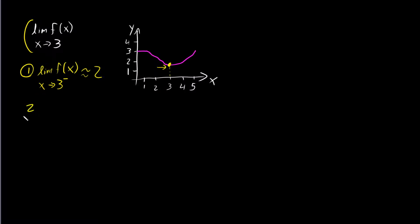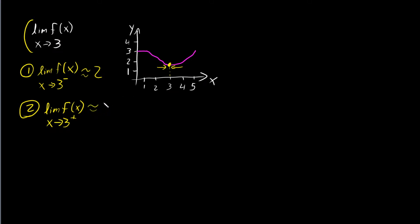The second thing that we have to know is what is the limit of f of x as x approaches 3 from the right — that plus sign means from the right. So similarly, we take a look at the function from the right side of 3. As the function approaches x equals 3, what is the value of the function? Again, we'll say that this value is roughly 2.